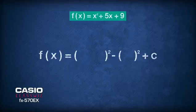To write the function into completed square form, we use the classic format of a big squared bracket minus a small squared bracket. A positive x is placed on the left side of the big bracket.